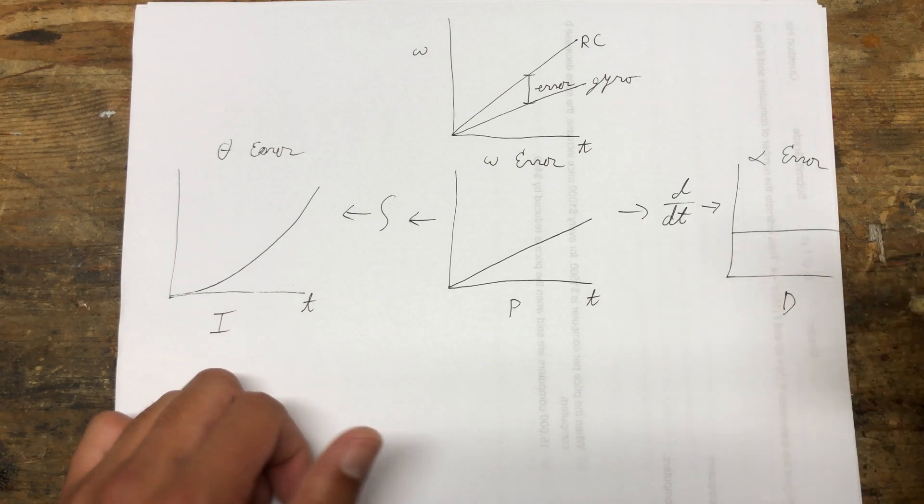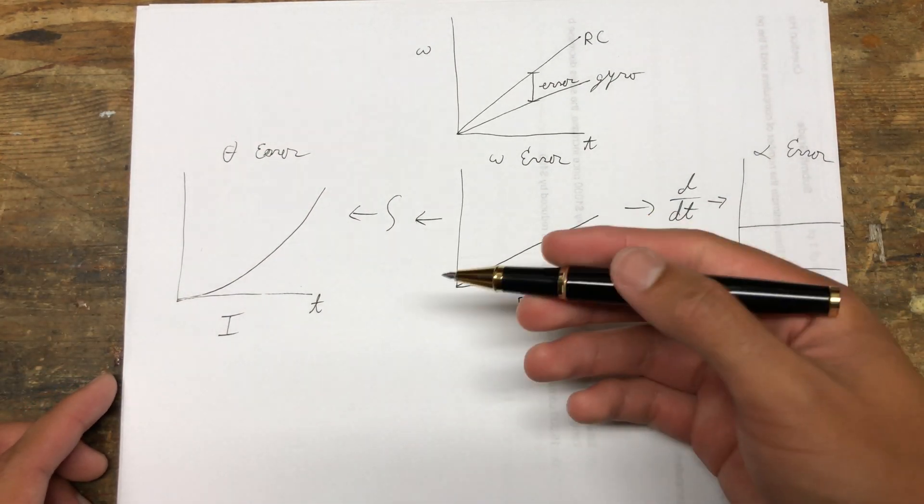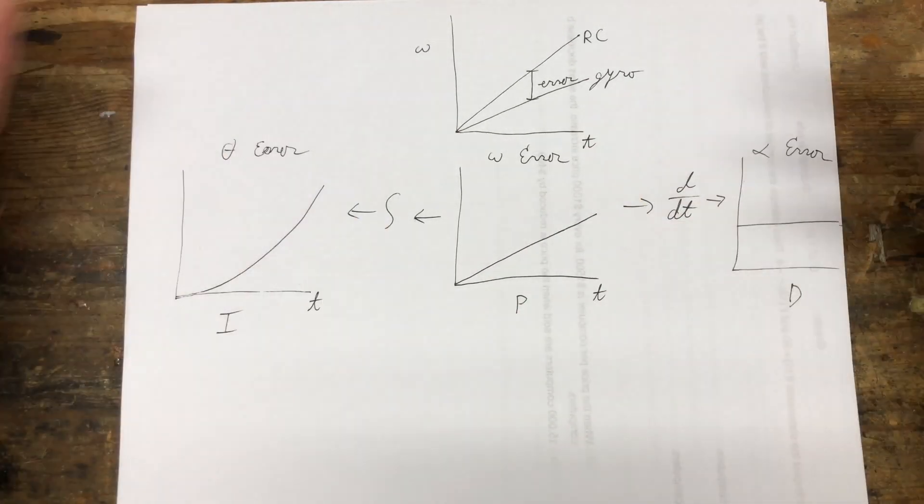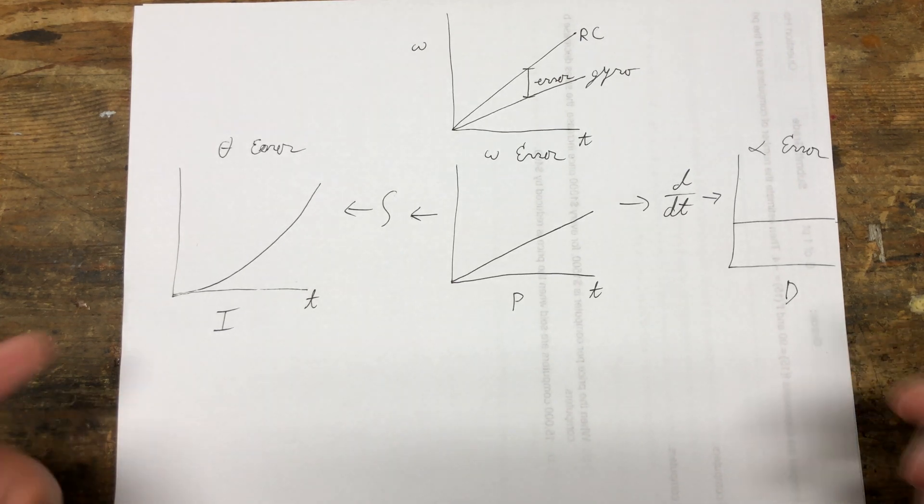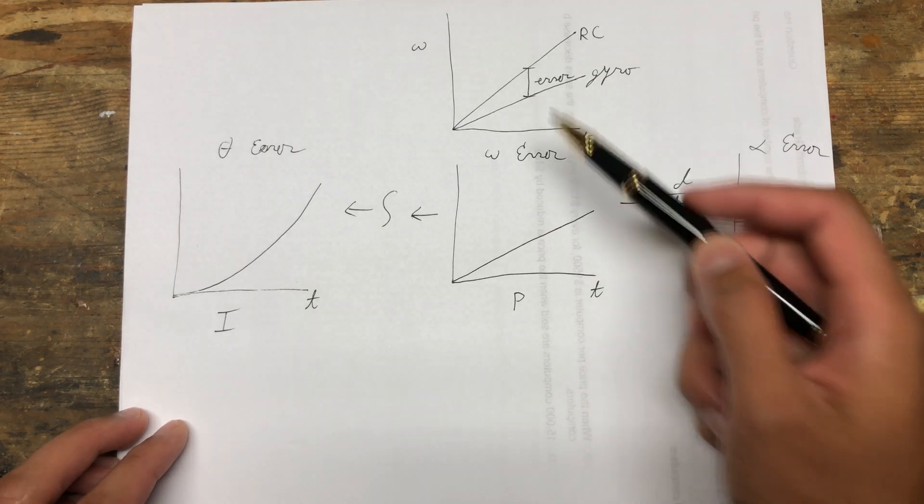We multiply this amount of error by some gain value, some constant value, and then that also gets mixed into the motor output. You have three values that get mixed into the motor outputs, and that's the basis of how a PID controller works. These three terms just work together to try to minimize the amount of error in the system.